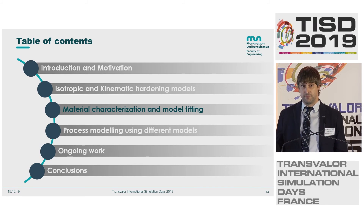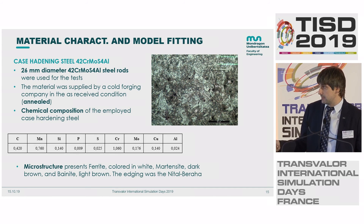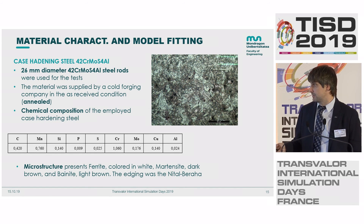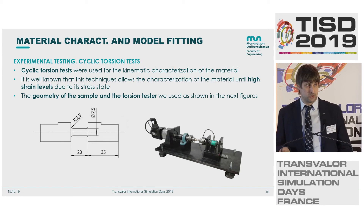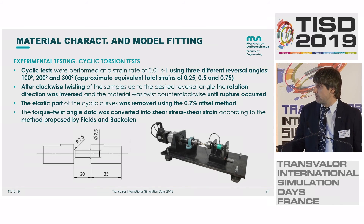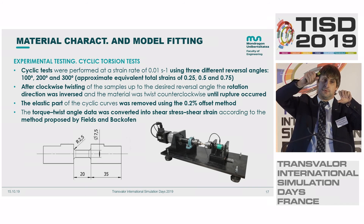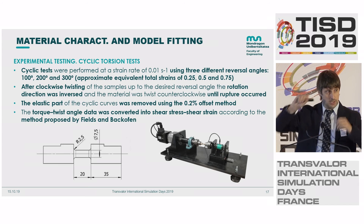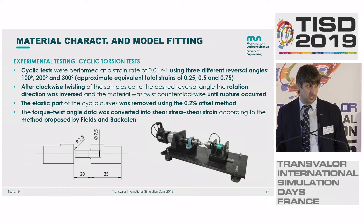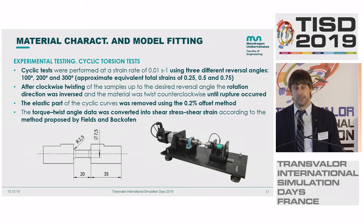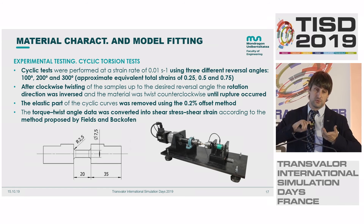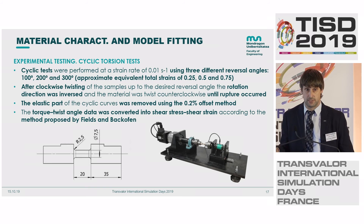For material characterization, we used classical case hardening steel from rods in annealed condition. We performed cyclic torsion tests — twisting to 100, reversing to rupture; 200 to rupture; 300 to rupture — giving pre-strains of roughly 25%, 50%, and 75%. These large strains are why we selected torsion for cold forging characterization.